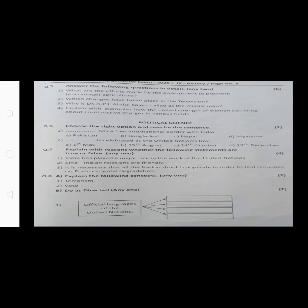After the fifth question, the Political Science part starts with question number six. The first question is: choose the correct option and rewrite the sentence. Some students only write the correct option without rewriting the whole sentence — you must choose the correct option and then rewrite the whole sentence. Both questions carry two marks.